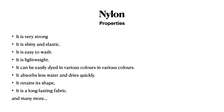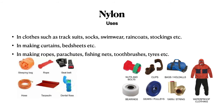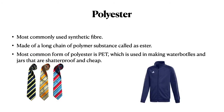Properties of nylon: it is very strong, shiny, and elastic; easy to wash; lightweight; can be easily dyed in various colors; absorbs less water and dries quickly; retains its shape; and is very long-lasting. Nylon is used in track suits, socks, swimwear, raincoats, stockings, curtains, bed sheets, ropes, parachutes, fishing nets, toothbrushes, and tires.